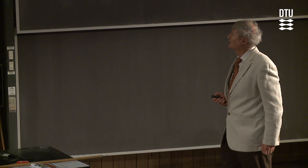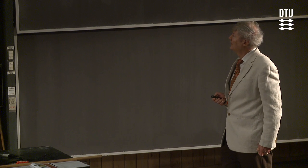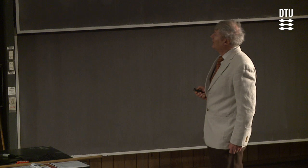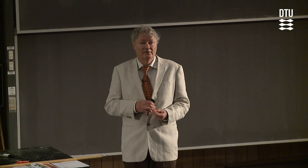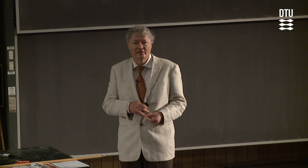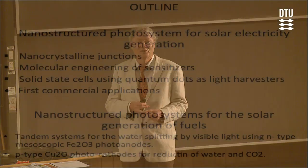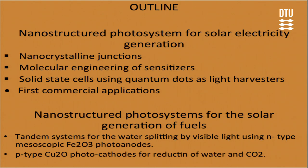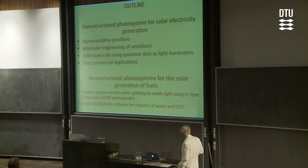So what that means is you get very high currents, and not only that — you get high voltages delivered from a simple system like this. This has now been a very hot topic, and papers are appearing in Science and Nature all the time. I'd also like to mention the outline: nanocrystalline junctions, tailoring sensitizers, guiding concepts for making a light absorber, learning from chlorophyll, solid-state cells, perovskites, some commercial applications, and time permitting, photosystems for fuel generation from solar radiation.